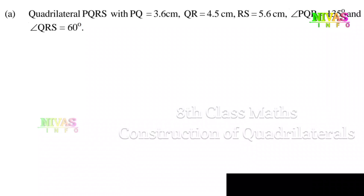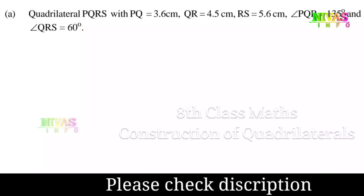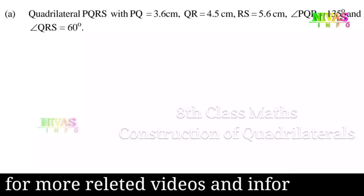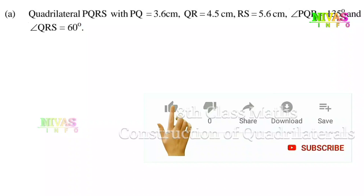Question number: PQRS quadrilateral. The measurements are: PQ is equal to 3.6 cm, QR is equal to 4.5 cm, RS is equal to 5.6 cm, angle Q is equal to 135 degrees, angle R is equal to 60 degrees. We need to draw this quadrilateral.